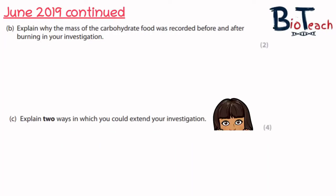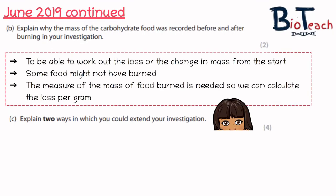Part B of this question asks you to explain why the mass of the carbohydrate food was recorded before and after burning, for two marks. Measurements taken before and after allow you to compare and work out the loss or change in mass from the start. If you didn't measure before, you wouldn't know what the starting mass was. Some food may not have fully burnt, so comparing before and after was key. Also, the measure of mass burned is needed to calculate how much mass is lost per gram when you burn it.